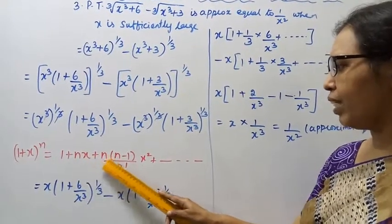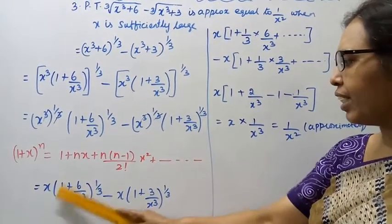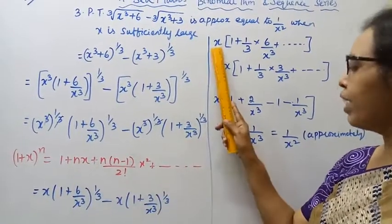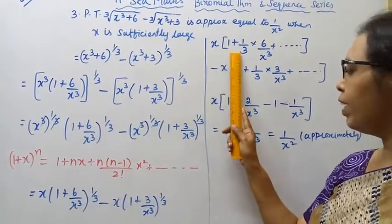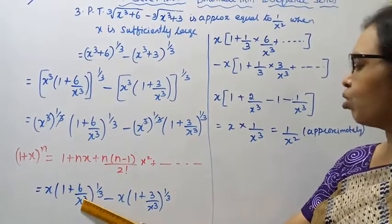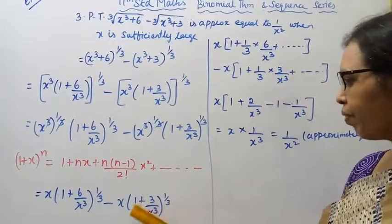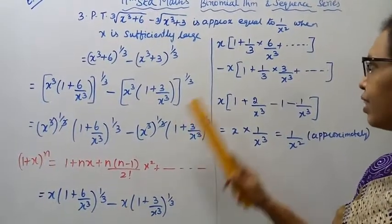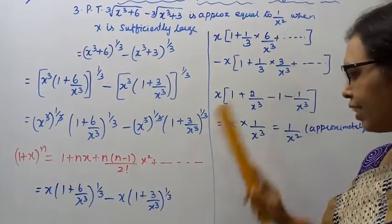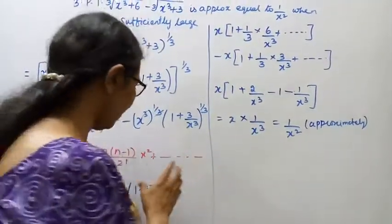For (1 + 6/x³)^(1/3), using the binomial expansion with n = 1/3 and x = 6/x³, the first two terms give 1 + (1/3)(6/x³). Similarly for (1 + 3/x³)^(1/3), we get 1 + (1/3)(3/x³), and subtracting these expressions.